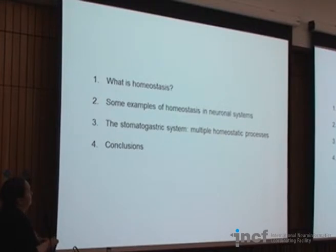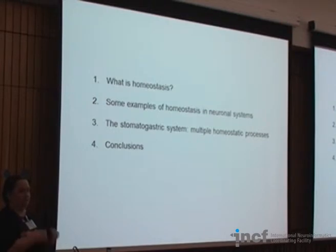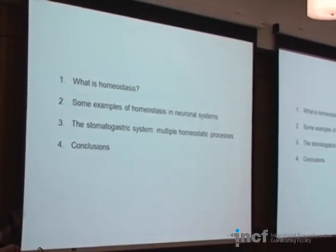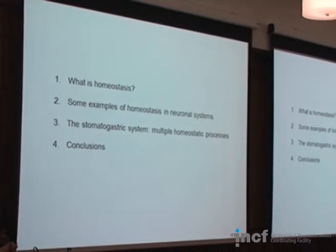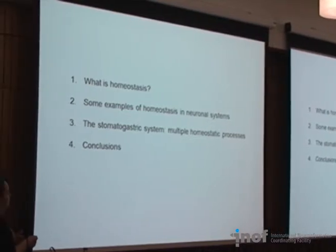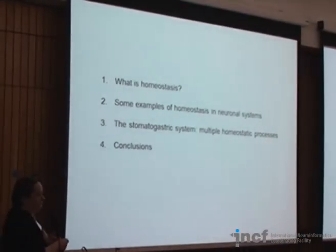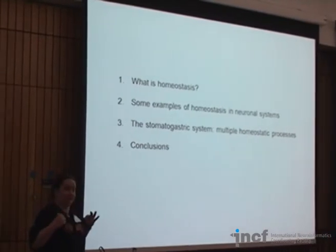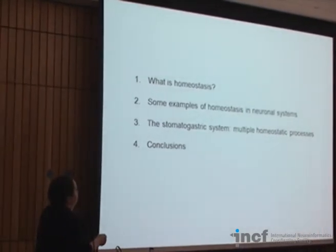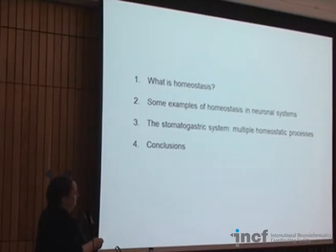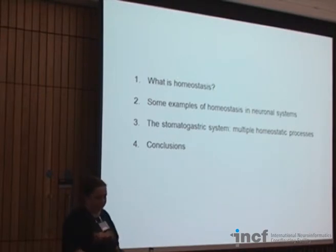I want to give you a brief overview of some examples of homeostatic processes that occur in different neuronal systems, just to show you how widespread a phenomenon it is and that it's not just occurring in the particular model system that I'm studying. I'll spend the bulk of the talk on the stomatogastric nervous system of crustaceans—lobsters and crabs—which is why I'm wearing this T-shirt. I will end with some conclusions and a look forward as to where all of this homeostasis work is going.